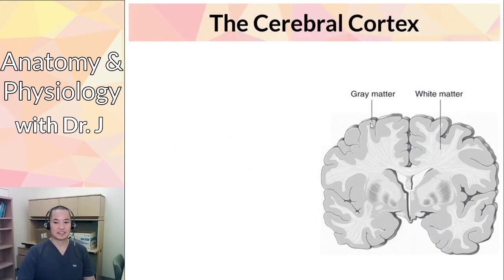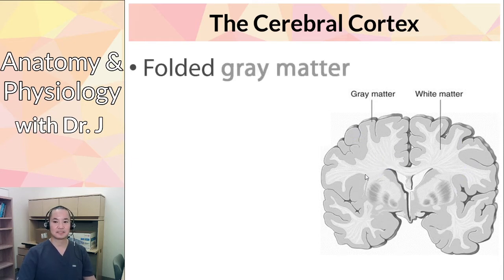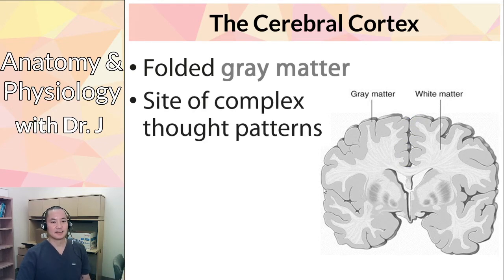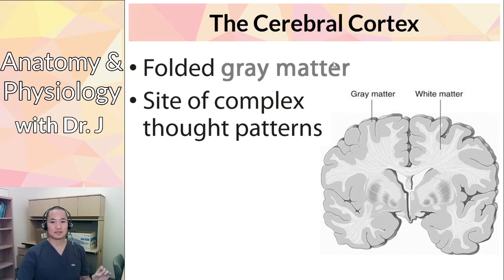Here's the cerebral cortex — the gray matter on the outside, compared to gray matter on the inside in the spinal cord. The cerebral cortex is this entire layer of gray matter. Notice that it's not a completely smooth layer — it has all these folds, hills and valleys. This is what we call our cerebral cortex, and this is where you have all these complex thought patterns: decision-making, planning, complex homework problems, and emotions.